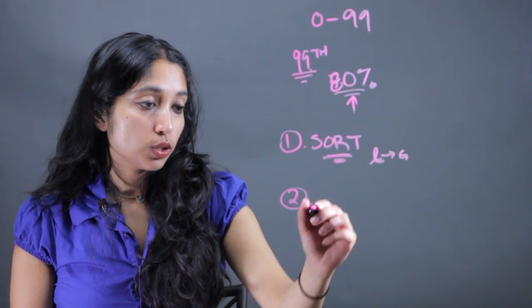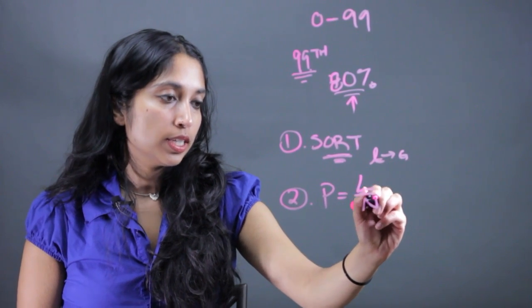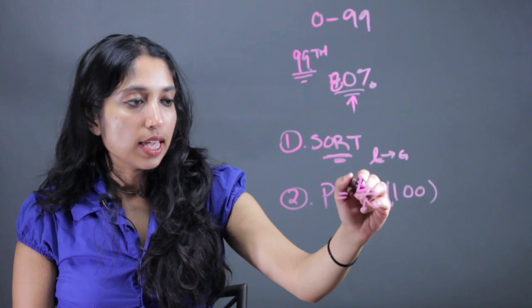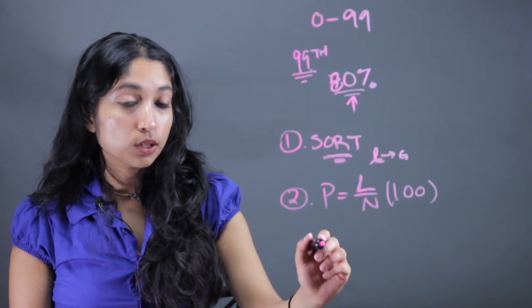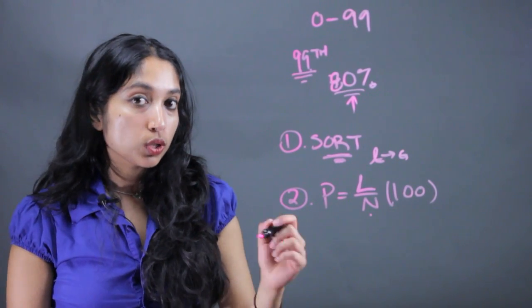Second thing we're going to do is use this equation, which is percentile equals l over n times 100. In this case, l is the number of tests or observations less than the test you're looking at, and n is the total number of tests.